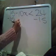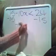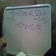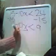So, if we subtract that we get negative 10x is less than 9. Is that right? Now you divide by negative 10.